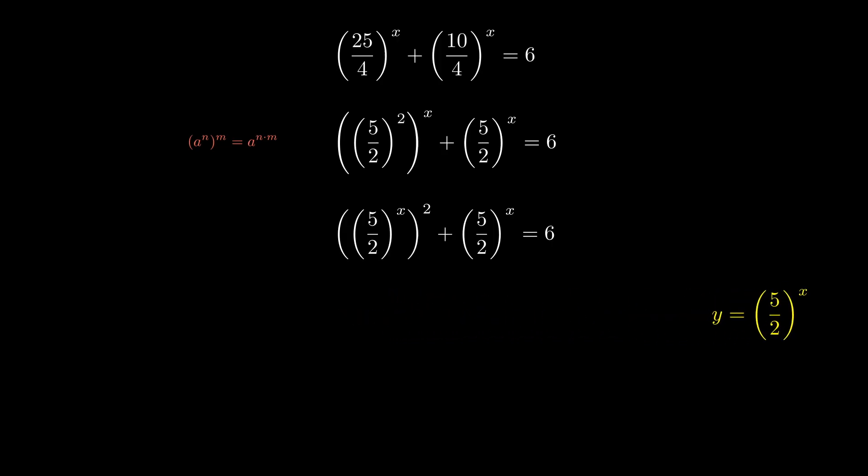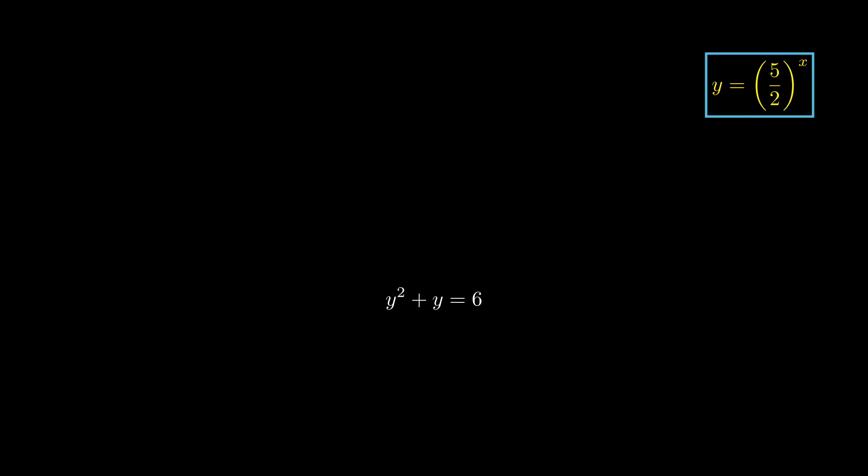And this reduces to a second degree polynomial, something that we can solve. There's many different ways to solve this, but a convenient way here is to factor. We'll move everything to the left-hand side so our equation is set equal to 0, and we factor.